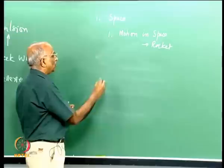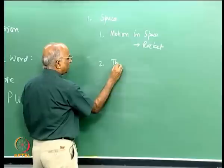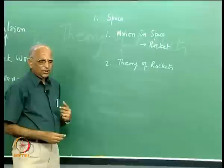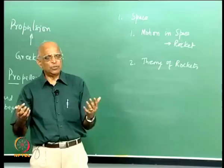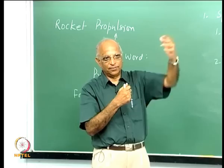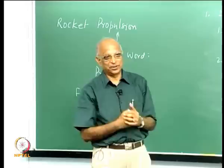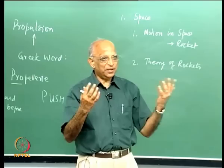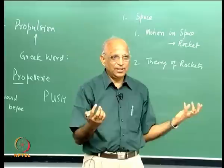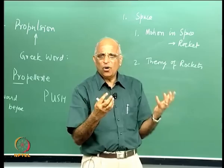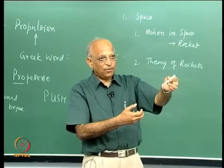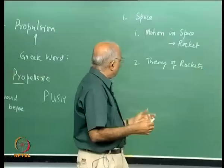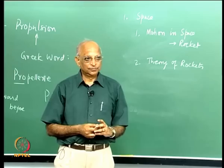Once the requirement of a rocket is clear, the second chapter will deal with the theory of rockets. Why should the theory of rockets be different from a theory of a car or a gun? In a gun, a bullet leaves at high velocity — so what is the great theory about a rocket? In a rocket there is some mass available which must push the object forward.